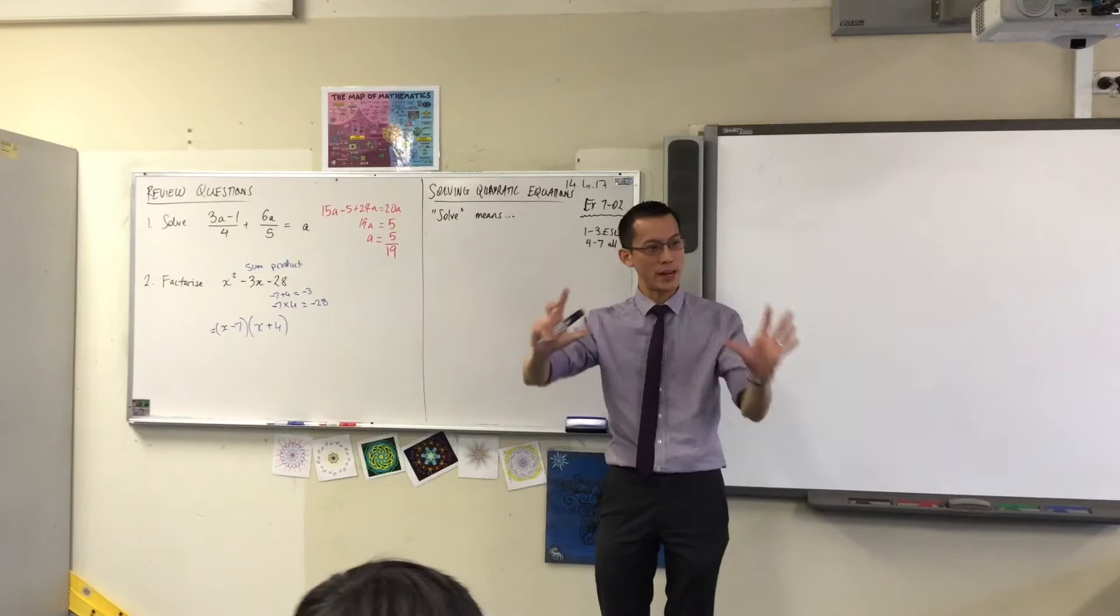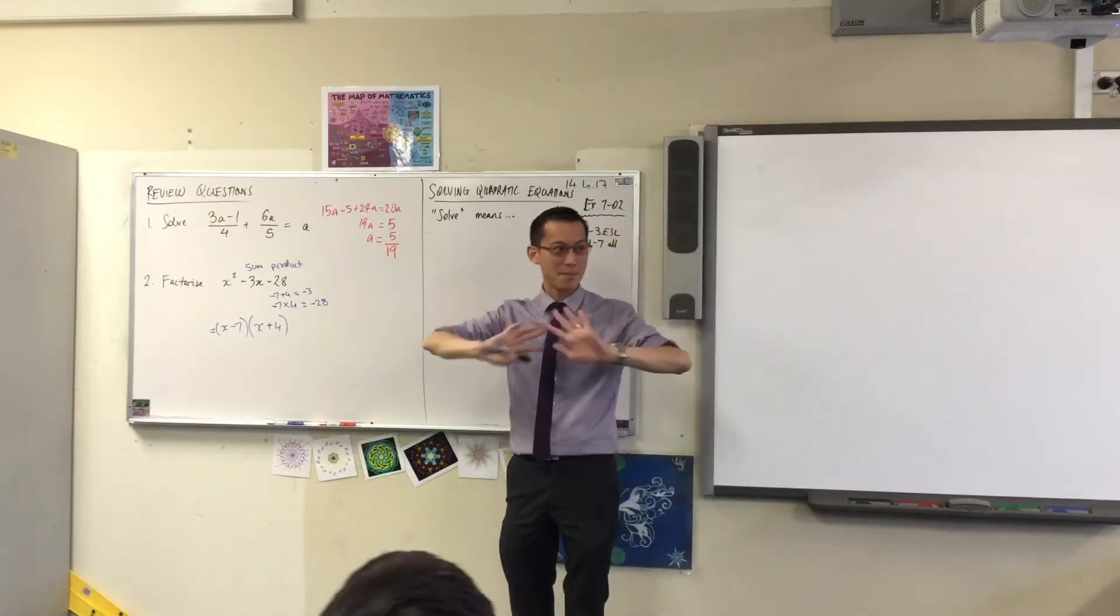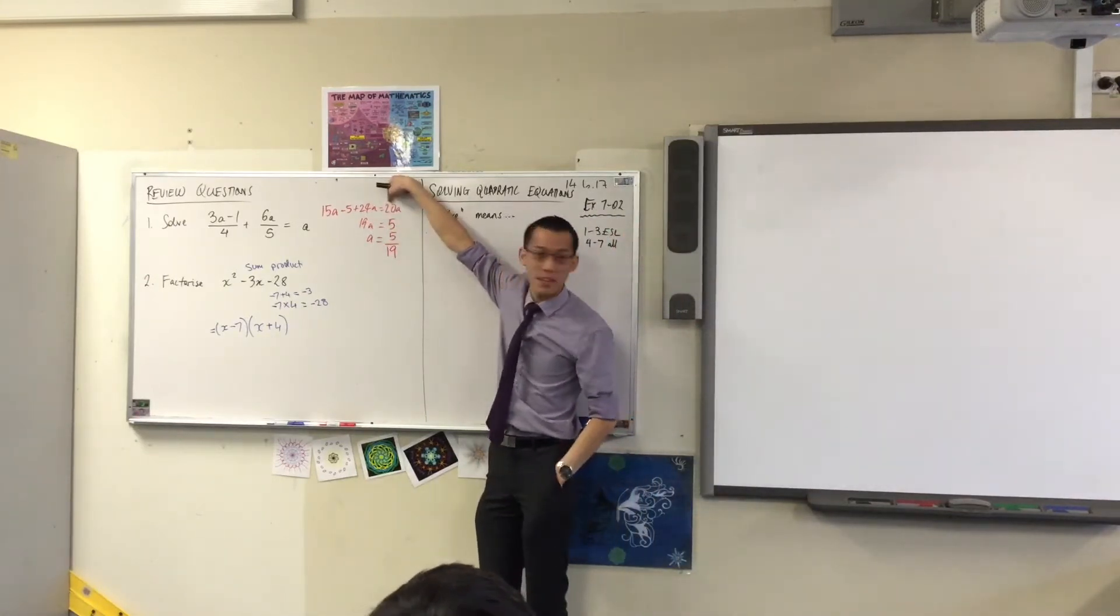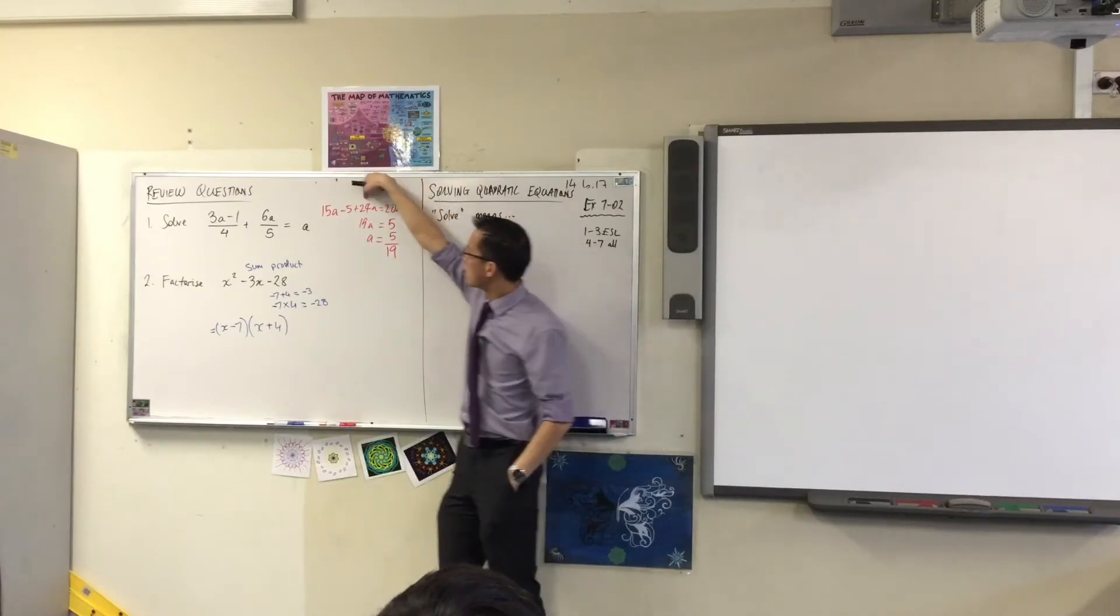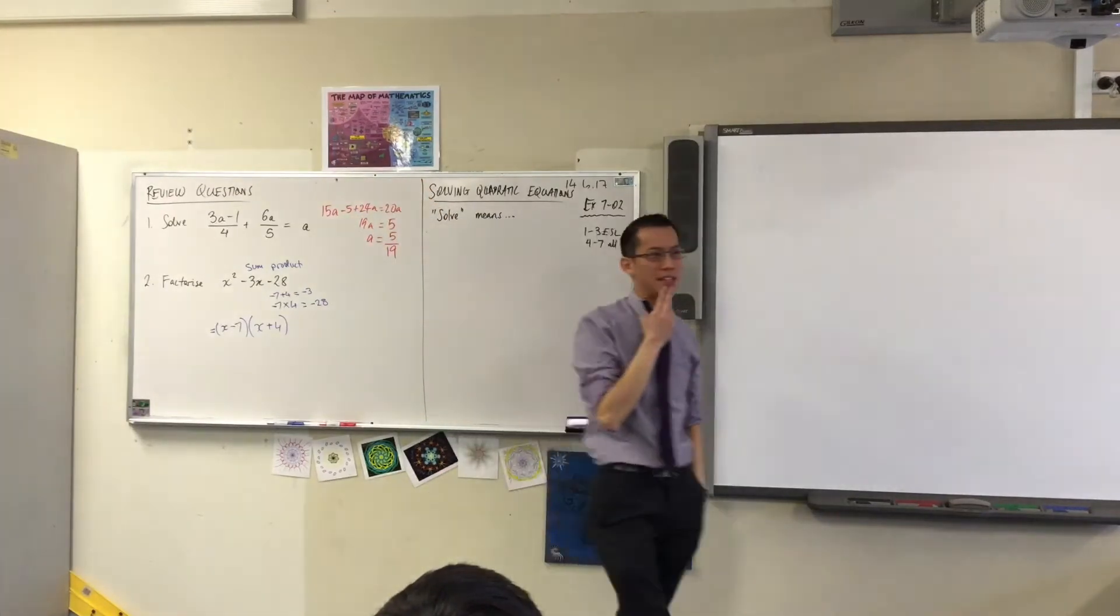Both sides have been multiplied by 20. I'll say it again, both sides multiplied by 20. You can see the 20 that appears here. 20 doesn't appear on the left hand side. Why is that? What happens on the left hand side?